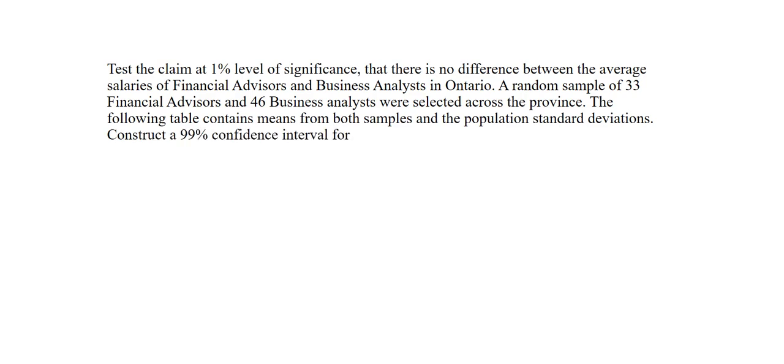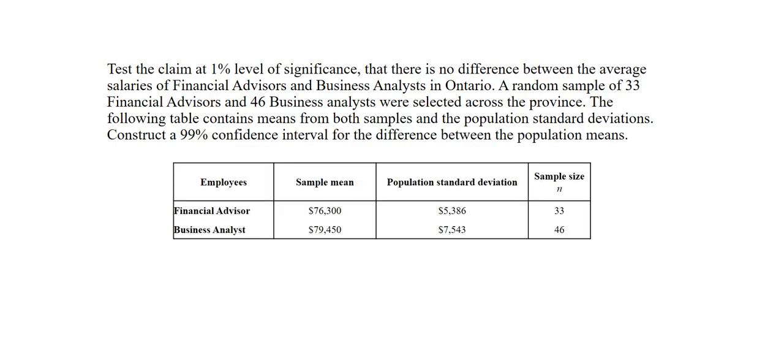Construct a 99% confidence interval for the difference between the population means. The information is shown in the table here. Now, the claim in this question is there is no difference between the average salaries. So, my population mean 1 is equal to population mean 2. My claim is therefore the null hypothesis: mu1 equals mu2 or mu1 minus mu2 equals 0. My alternative is mu1 is not equal to mu2 or mu1 minus mu2 is not equal to 0.